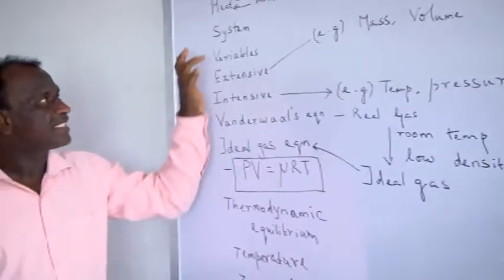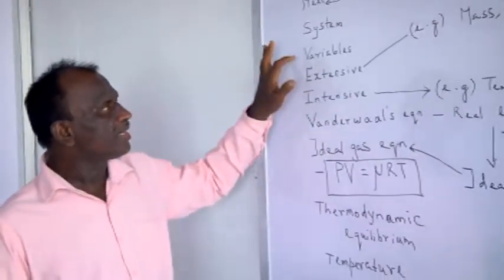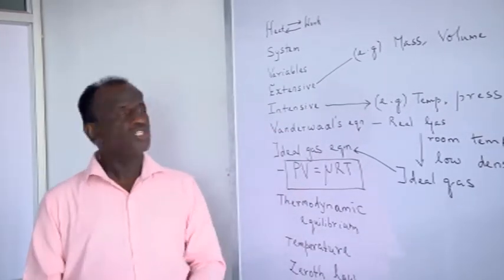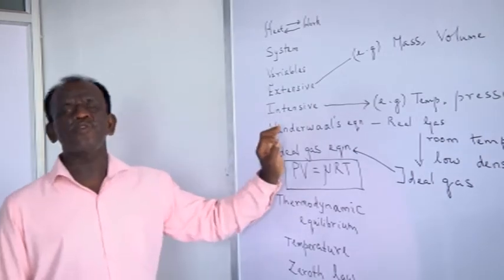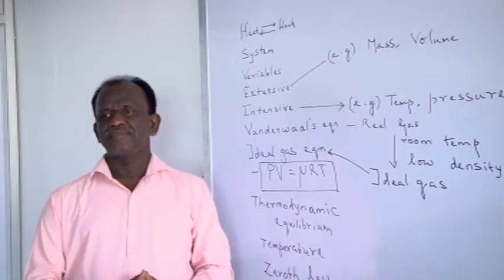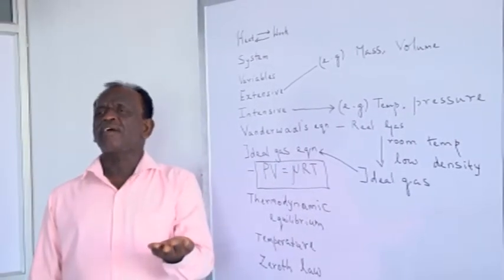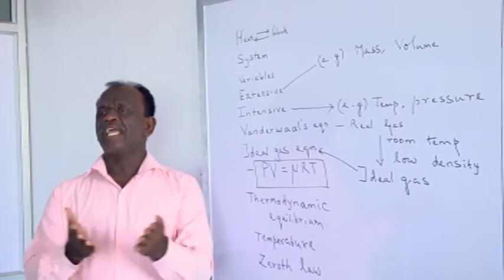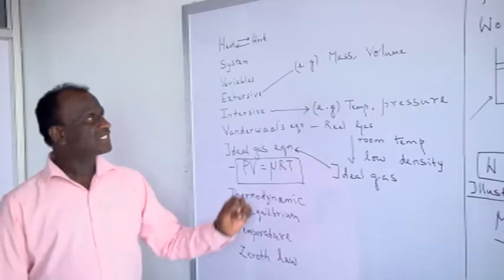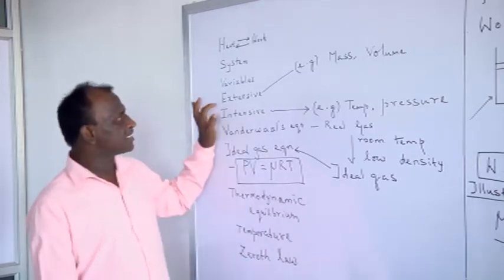In order to describe a system, we require some variables which are called thermodynamic variables. There are two types of thermodynamic variables: one is called an extensive variable, another one is called an intensive variable. Mass and volume are examples of extensive variables. Suppose I have 1 kilogram of mass on my right hand as well as 1 kilogram of mass on my left hand. On being added up, what I have is a resulting system of 2 kilograms of mass. Those variables that satisfy the above algebraic addition are called extensive variables.